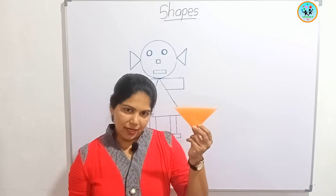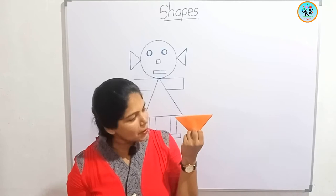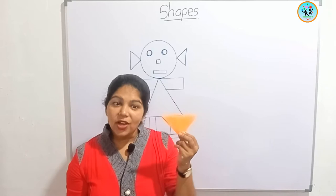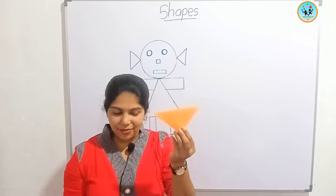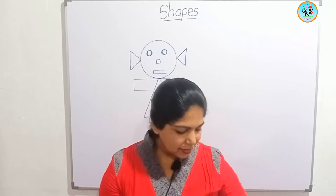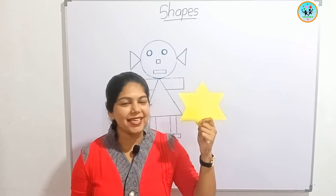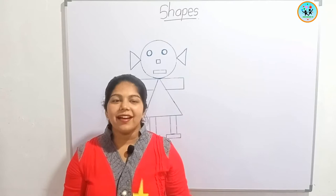This is a paper. Can you tell me what is the shape of this paper? Yes, it's like a triangle. What's this shape? Yes, it's a star.